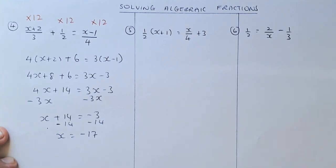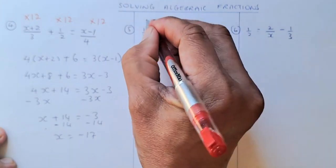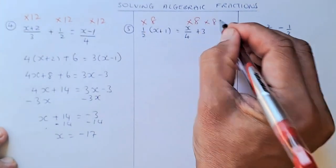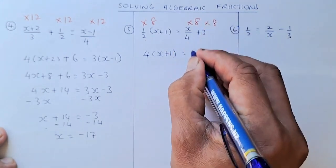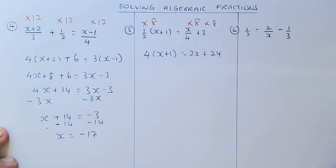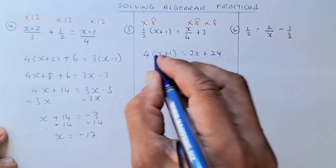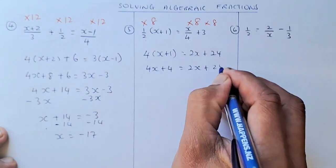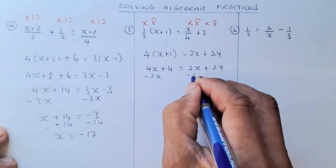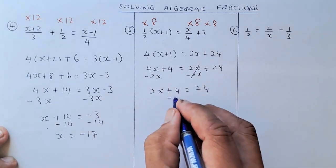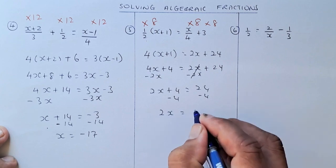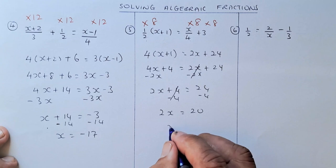Next question: a half bracket x plus 1 equals to x over 4 plus 3. The lowest common denominator is 8, so multiply by 8 in each term. 8 divided by 2 gives 4 bracket x plus 1. The second expression becomes 2x, and the third expression equals 24. Expanding: 4x plus 4 equals to 2x plus 24. Subtract 2x on both sides to get 2x plus 4 equals to 24. Then minus 4 on both sides: 2x equals to 20, so x equals to 10.